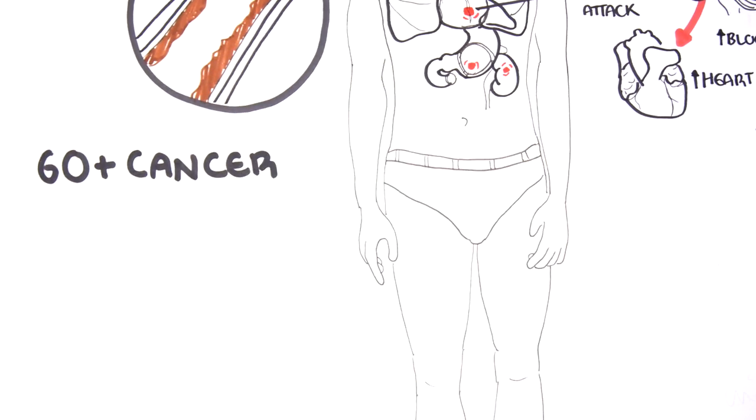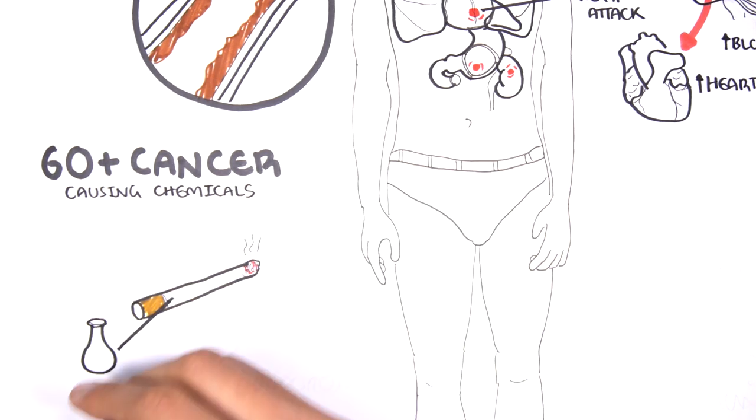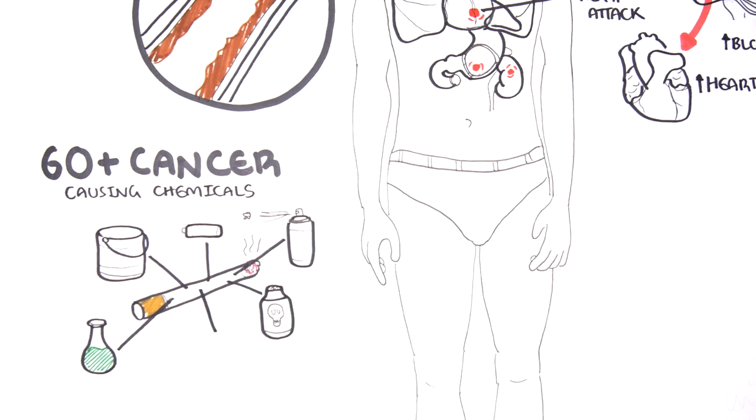More than 60 cancer-causing chemicals: The list of chemicals that cause cancer in cigarettes is really long. There are more than 60 chemicals in cigarette smoke that have been identified as causes of cancer. That's way too big a list to put in this video.